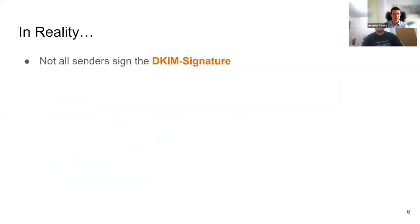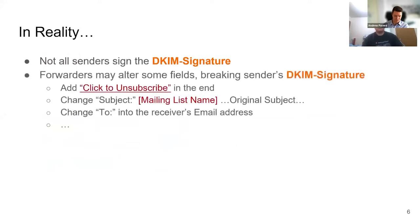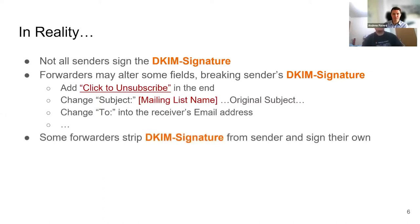But will it? In fact, not all senders sign a DKIM signature upon sending out emails in the first place. And even if they have sent with a signature, it may still be broken by all these common cases — for example, a clicked unsubscribe link added to the email body, adding a mailing list name prior to the original subject, or changing the TO address to help it look more reasonable. Some may be worse: they simply strip off the original DKIM and sign their own, and may change the FROM into a mailing list address, making authentication nearly impossible.